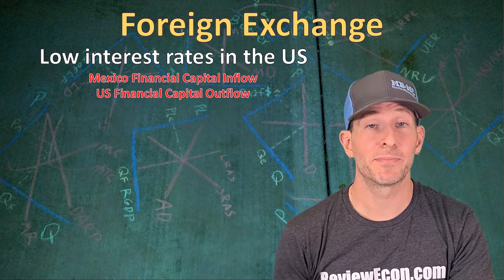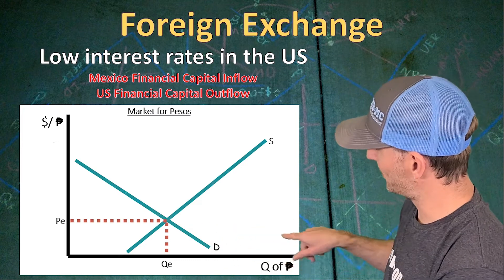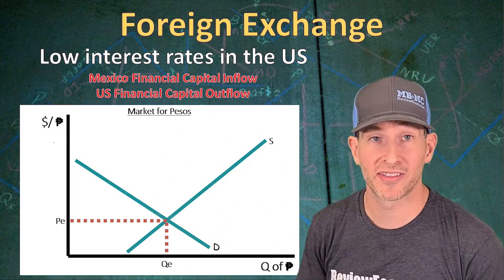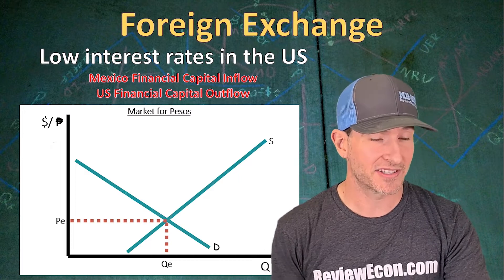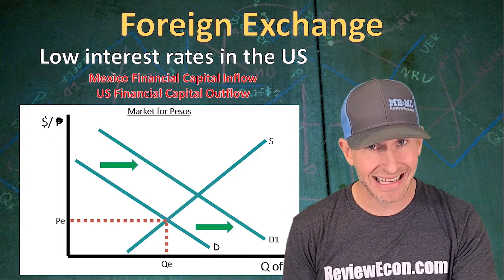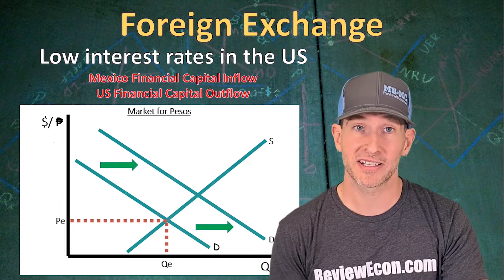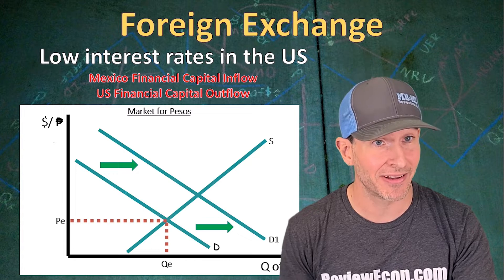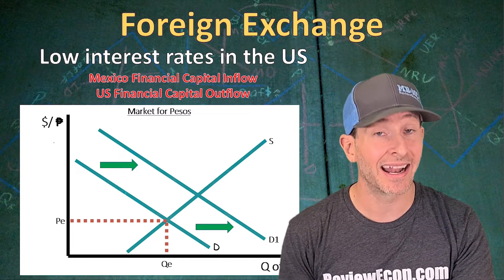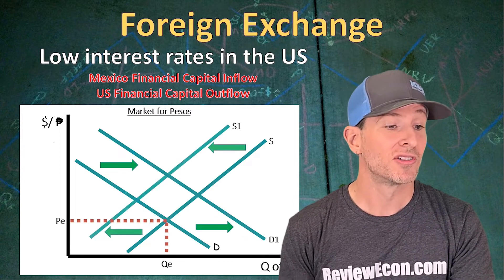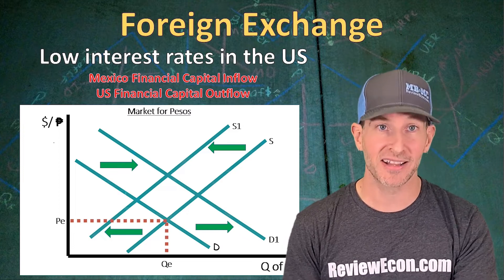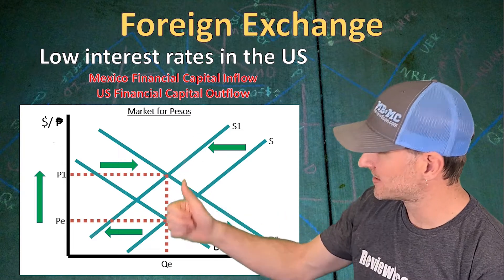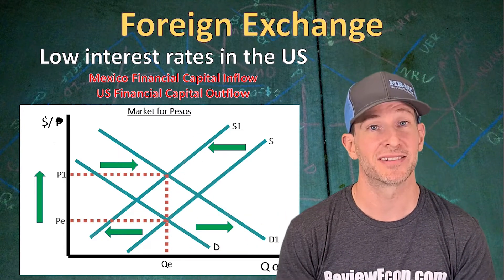Looking at the impact on the Mexican peso market — with quantity of pesos on the X-axis and the price of pesos in US dollars on the Y-axis — Mexico's financial capital inflow means we see an increase in the demand for Mexican pesos. Foreign investors who already have pesos will be less likely to sell them since they can earn higher interest rates in Mexico, so we see a decrease in the supply of Mexican pesos. Both shifts cause the exchange rate to increase, meaning the Mexican peso has appreciated.